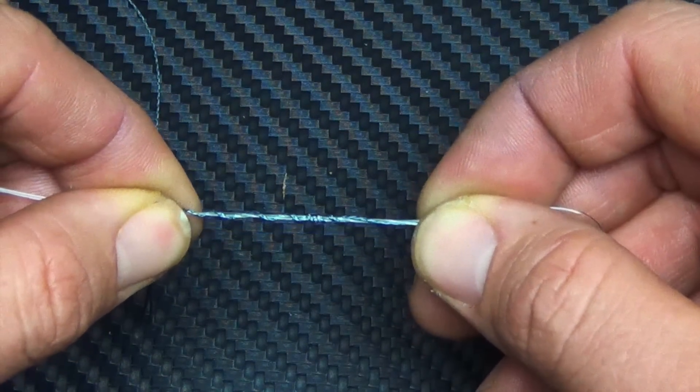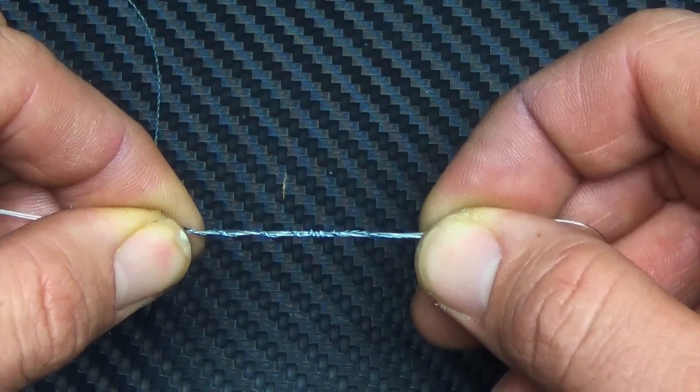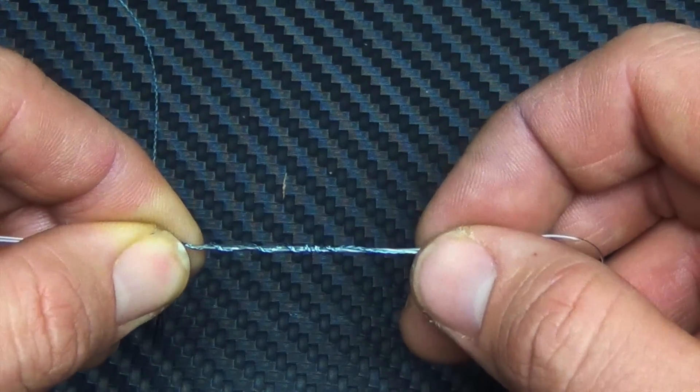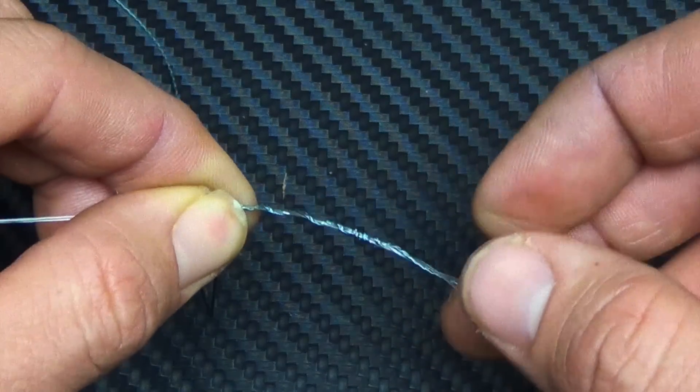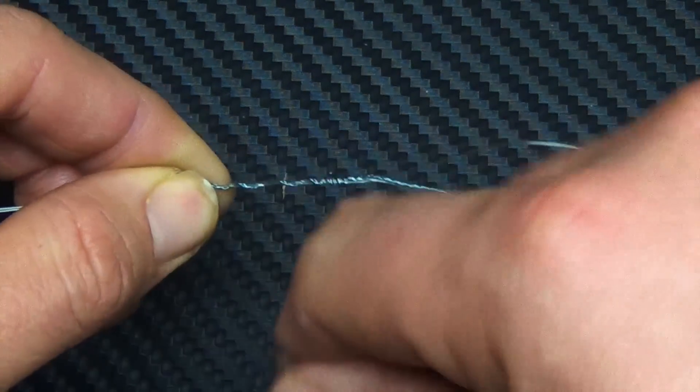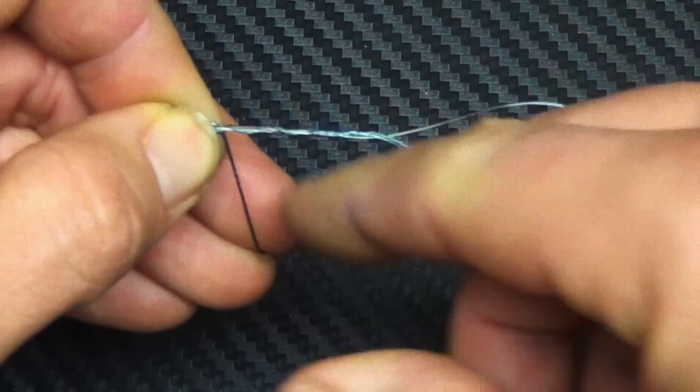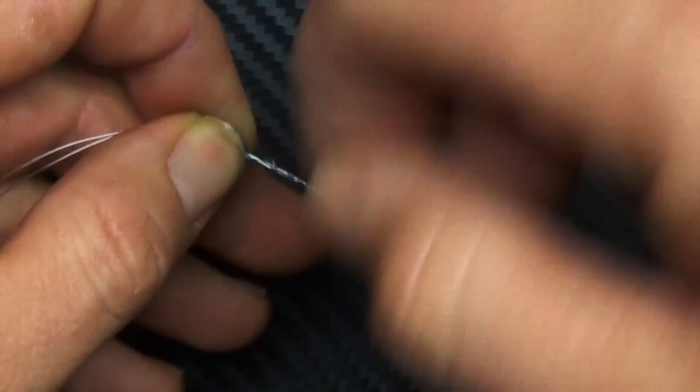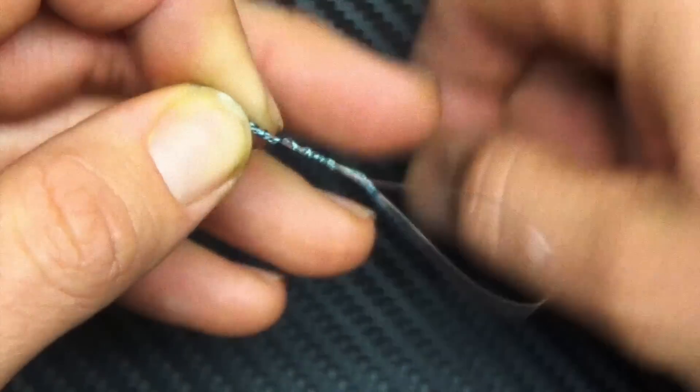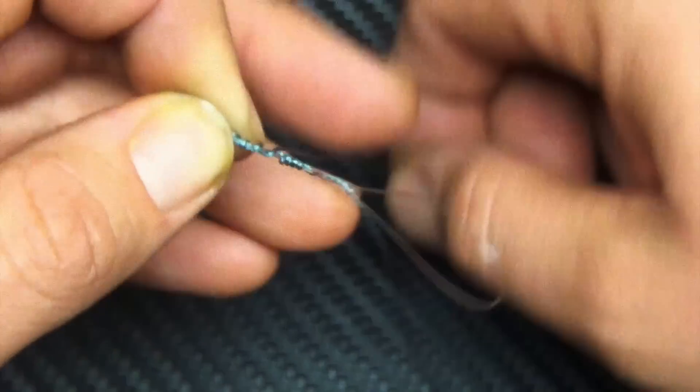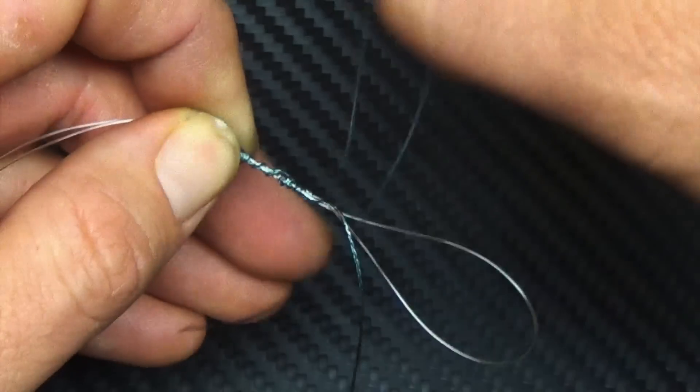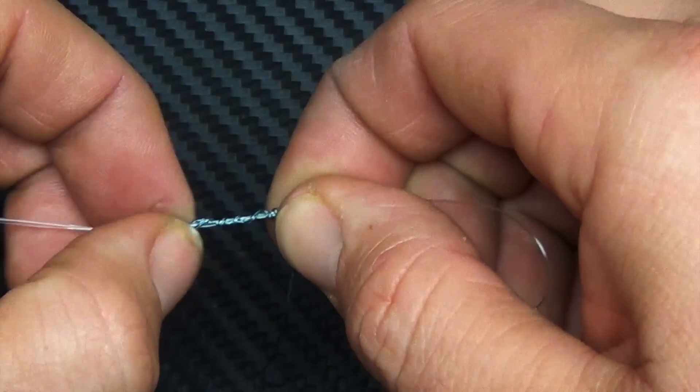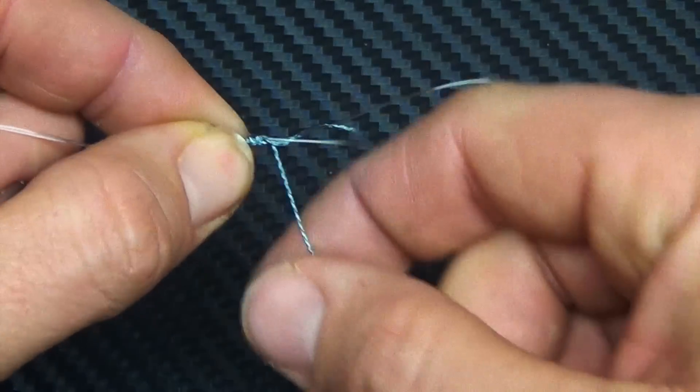Then you're going to go back the other direction from left to right seven more times over everything. So I like to pinch it with my left hand here and go back over. One, two, three, four, five, six, seven. And once I've gone seven times, go back through the loop.